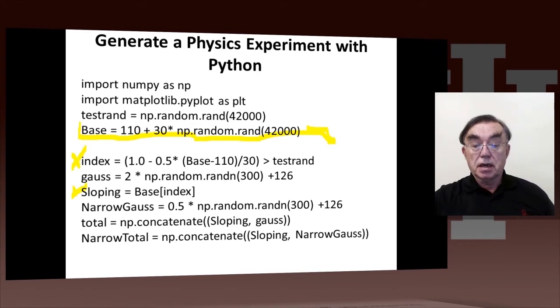So index is a test, which is true if this expression here, which is a function of the mass, which is the thing that's generated here in base. And this expression here is true if this number, which is 1 for a mass of 110 and is half for a mass of 140, is greater than another random number, which is just a set of random numbers between 0 and 1. So this index, this instruction here, generates randomly a cutoff, which is a no-cut for low mass, and at high mass, it cuts off half the events.